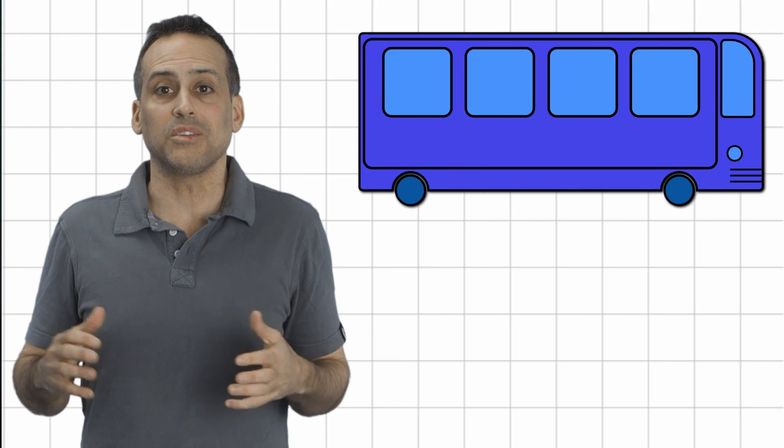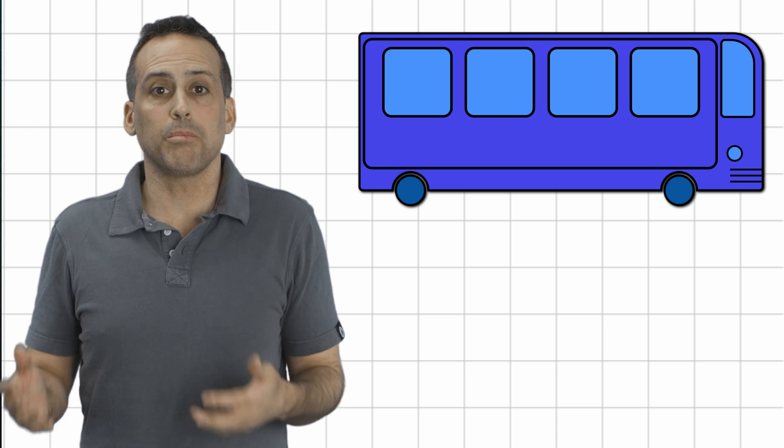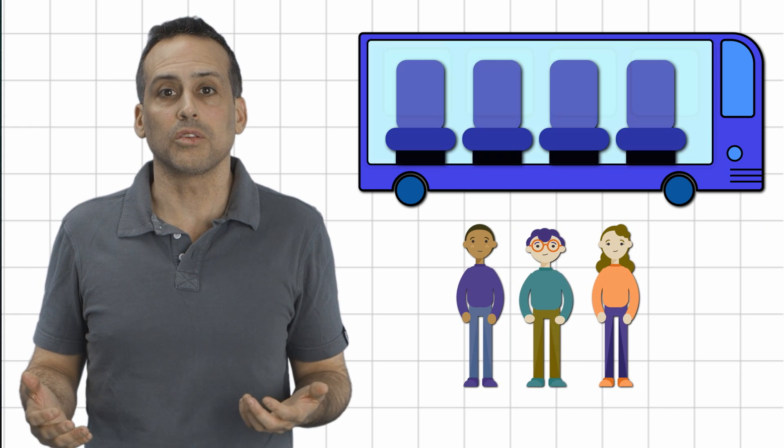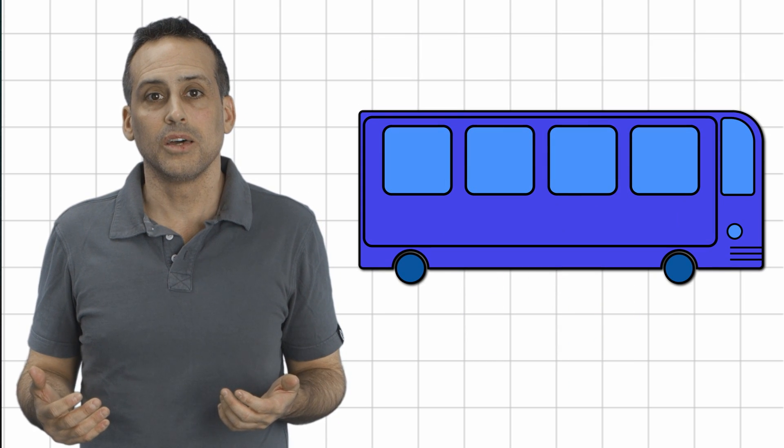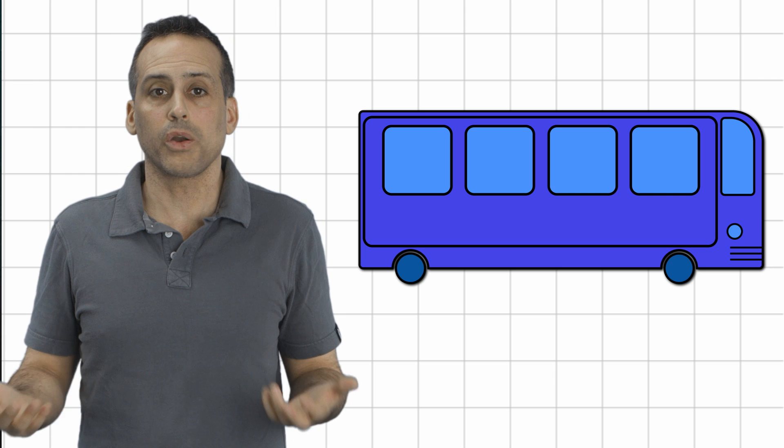To borrow Kelsey's earlier analogy, suppose that there are some empty seats on a bus in which no one is standing. Well, we know the quantity of people is less than the quantity of seats, even though we don't know how big either quantity is. And if every seat is taken, then we know the quantities of people and seats are equal.